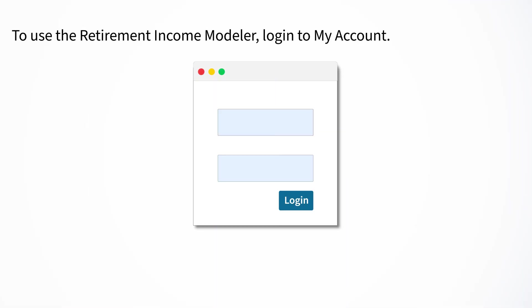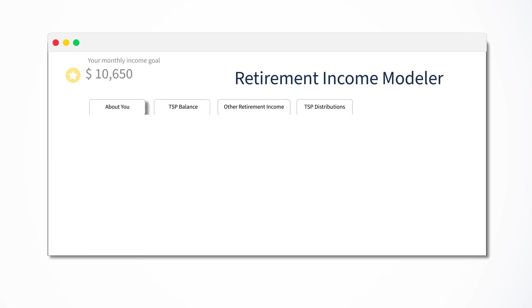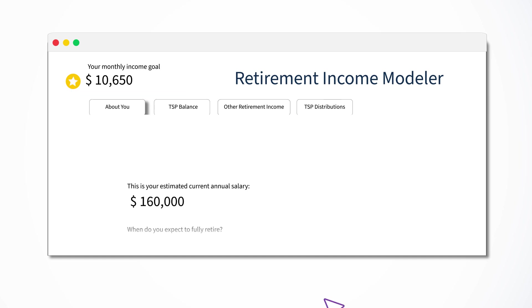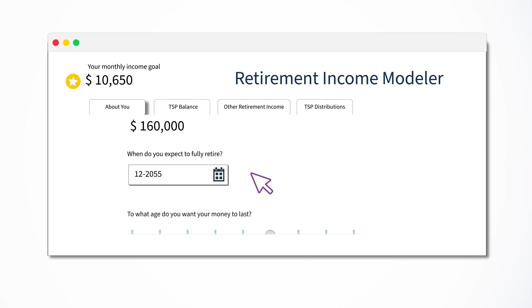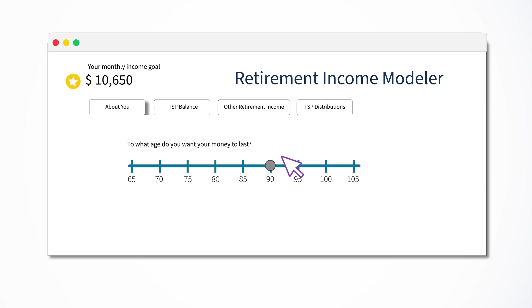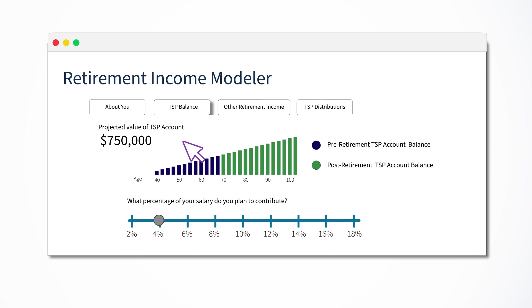Here's how to use the Retirement Income Modeler. First, log in to My Account. In the About You tab, project your desired monthly income in retirement by reviewing factors like your annual salary, desired retirement date, and how long you want your retirement income to last.